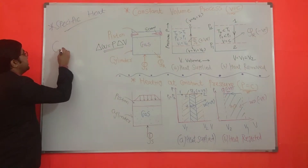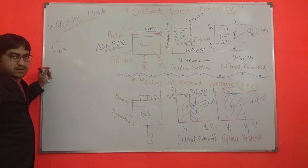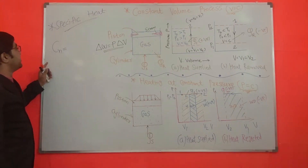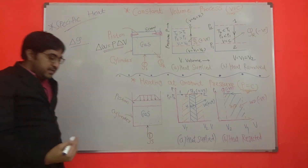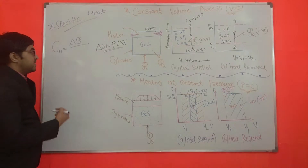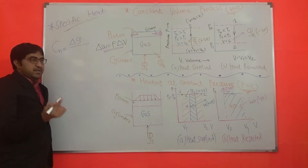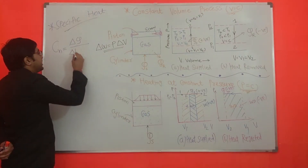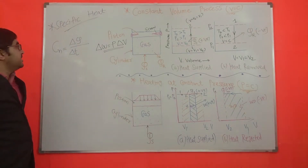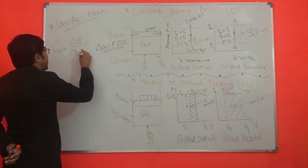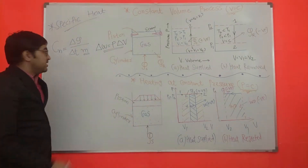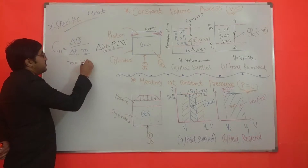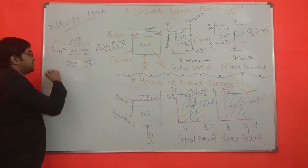According to the definition of specific heat, Cn (specific heat) for any gas, liquid, or solid is equal to the amount of energy required, delta Q, to raise the temperature by one degree Celsius, per unit mass of substance where M equals one kg.